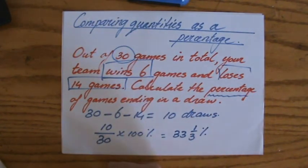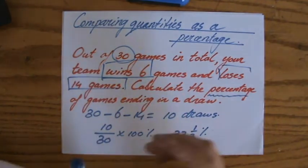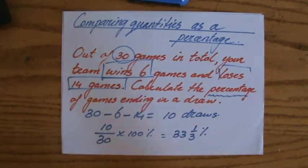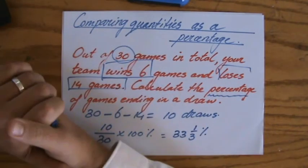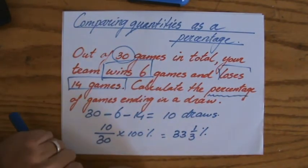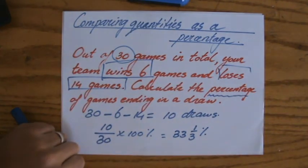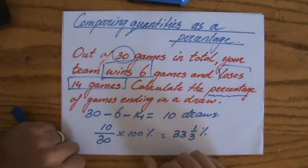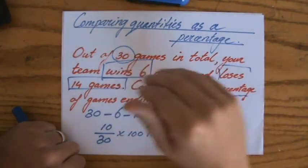So perhaps you should change sports here because you only win 6 and you lose 14 and 10 draws. Perhaps try something else. Anyway, 33 and a third percent of the games end in a draw. Next video about reverse percentages and I also have videos about percentage increase and decrease. I'll see you there.